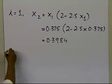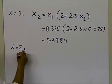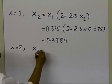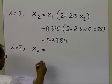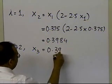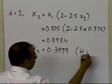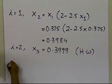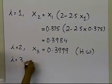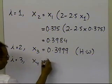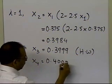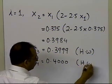Let me conduct one more iteration. I'll get i equal to 2, x3 will turn out to be 0.3999. So I'm going to ask you to do that as homework, and you choose i equal to 3, you'll get x4 equal to 0.4000. Again, I'm going to ask you to do that as homework.